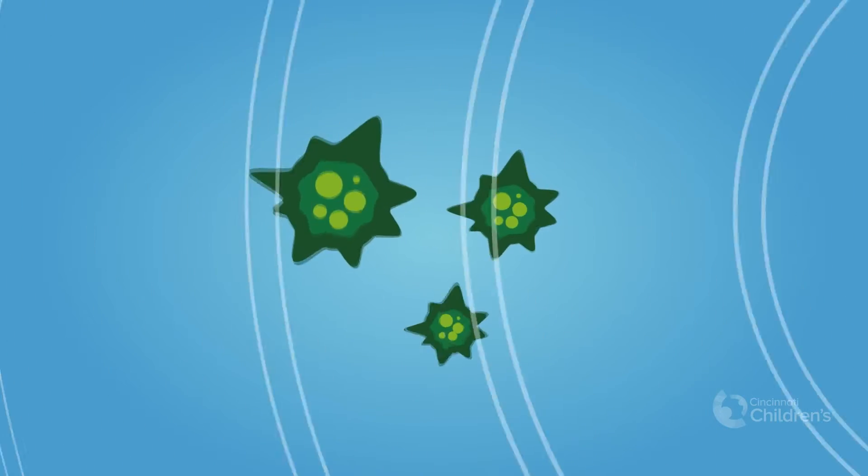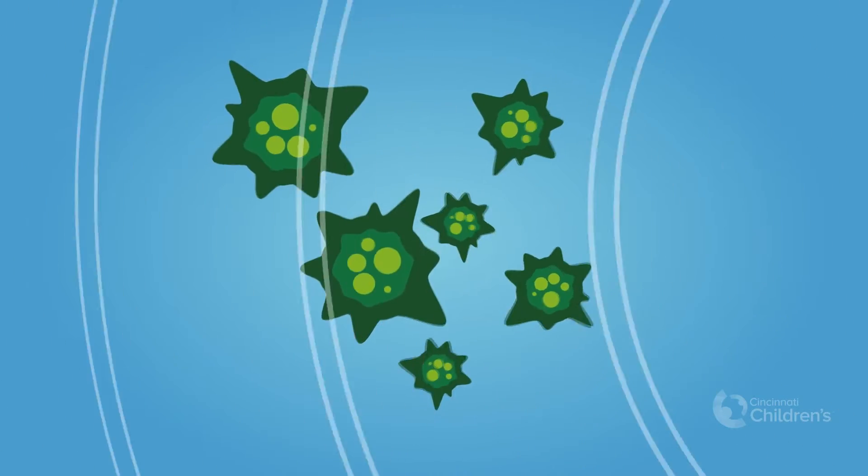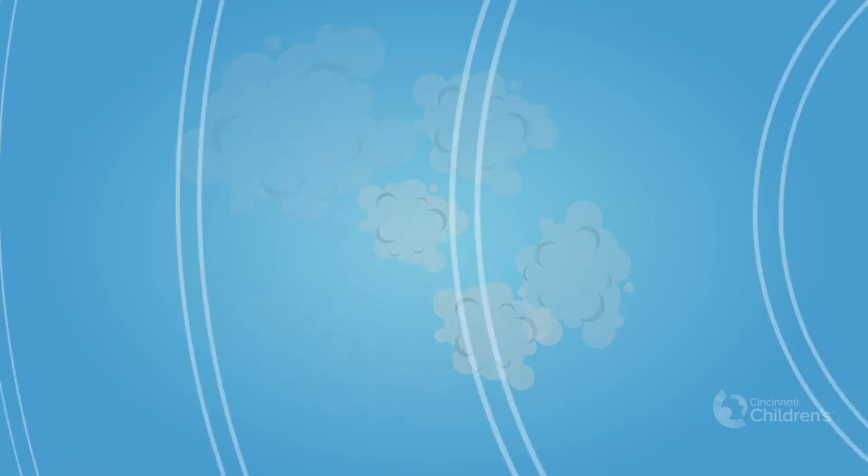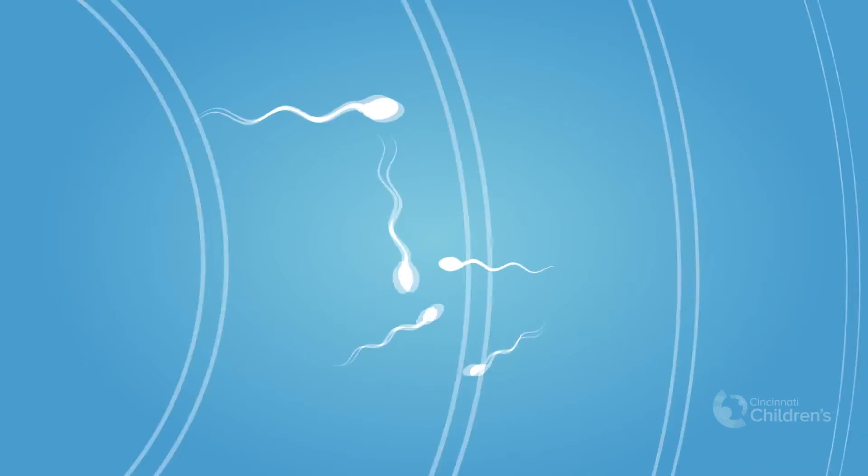Cancer treatment is designed to target and destroy rapidly growing cells. It works well for killing cancer cells. Unfortunately, it can also kill other cells that are growing quickly, which includes the cells that make sperm.